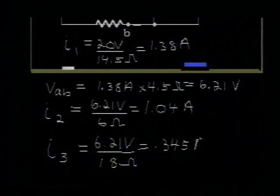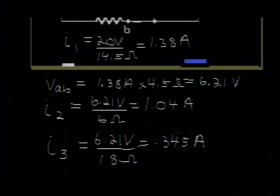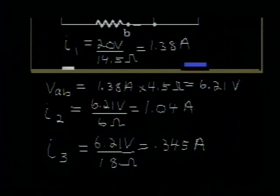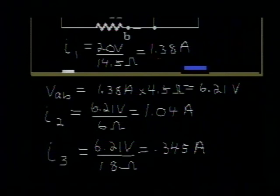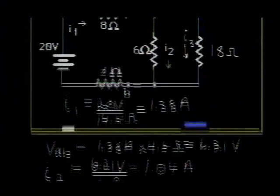A good check in our answers would be to add up I2 and I3 to see if we get the value for I1. And I think if you do that, you will find that the three significant figures, this does come out to be 1.38 amps. So they are our three currents. We have solved our problem. Let's move on then to our next problem.